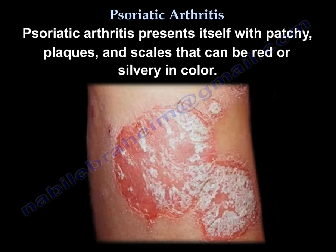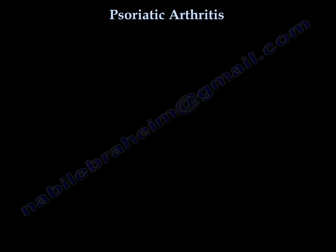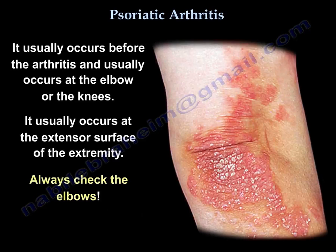Psoriatic arthritis presents with patchy plaques and scales, which can be red or silvery. These usually occur before the arthritis and typically appear at the elbows, knees, and extensor surfaces of the extremities. Always check the elbows.